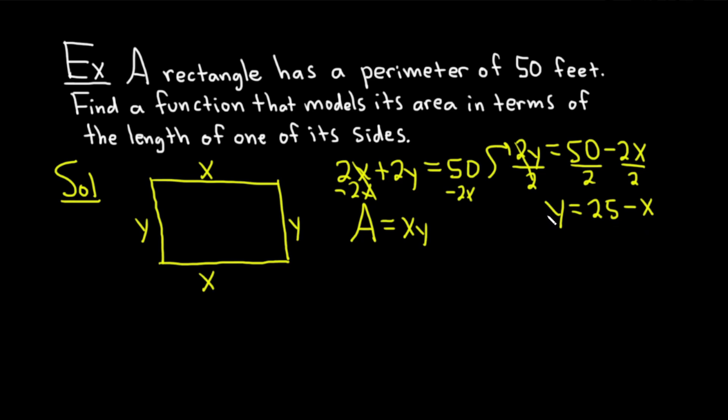So now what you can do is you can take this y and you can plug it back in here. So then A is equal to x times y. But we know y is 25 minus x. So A, which is the area, is equal to x times 25 is 25x minus, and then x times x is x squared.